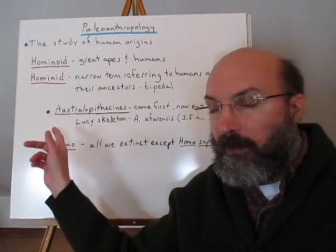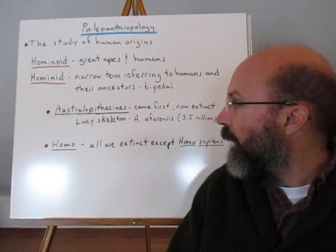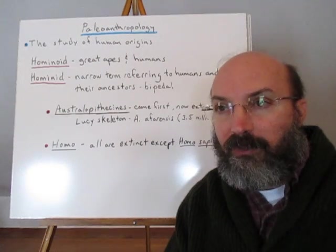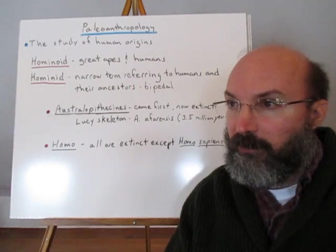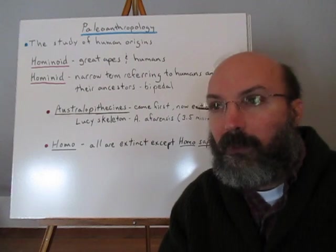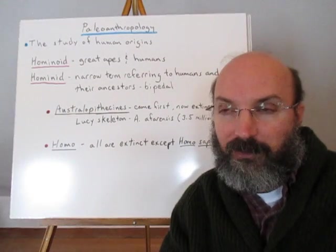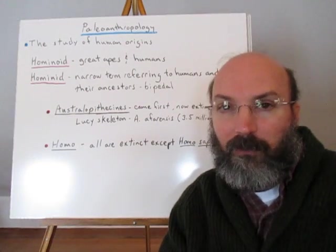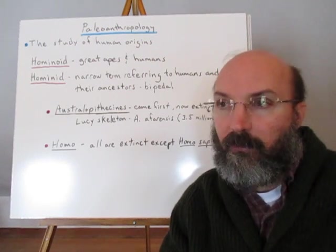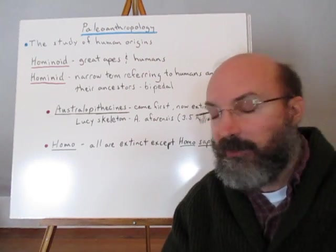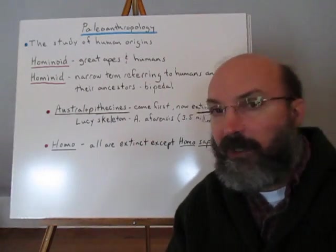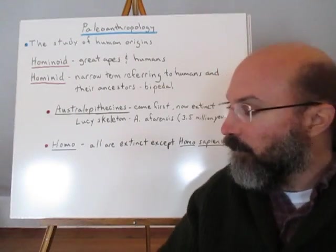We very likely are ancestors of Australopithecines, although we don't know for sure. These are all extinct, but their oldest skeletons go back at least 3.5 million years. Lucy is probably one of the most famous skeletons — it was one of the first ones discovered. There are actually hundreds of similar skeletons that have been discovered since then. The genus Homo includes all extinct species except for Homo sapiens, modern humans.